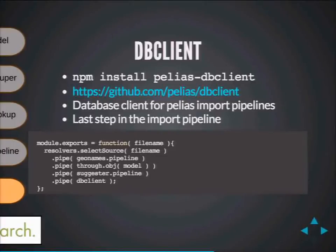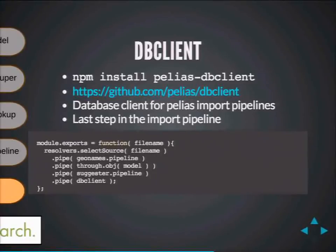Finally, it goes to the DB client — the Elasticsearch client that puts all the massaged data into Elasticsearch in bulk and in parallel. If you're running on a four-core machine, it parallelizes the whole operation. All of this happens using Node.js streams, so it's not just one point at a time — it's a stream of points, making the whole process fast.